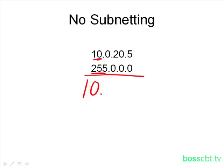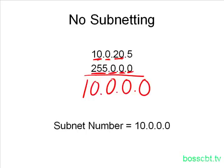Then we move on. If the octet in the subnet mask does not equal 255 — and in fact if it equals zero — we ignore the octet in the IP address and just write a zero. The second octet of the subnet mask is zero, so we write zero and move on. The third octet is also zero, so we write zero. And the fourth octet is zero as well, so we write zero. That is our subnet number: 10.0.0.0.